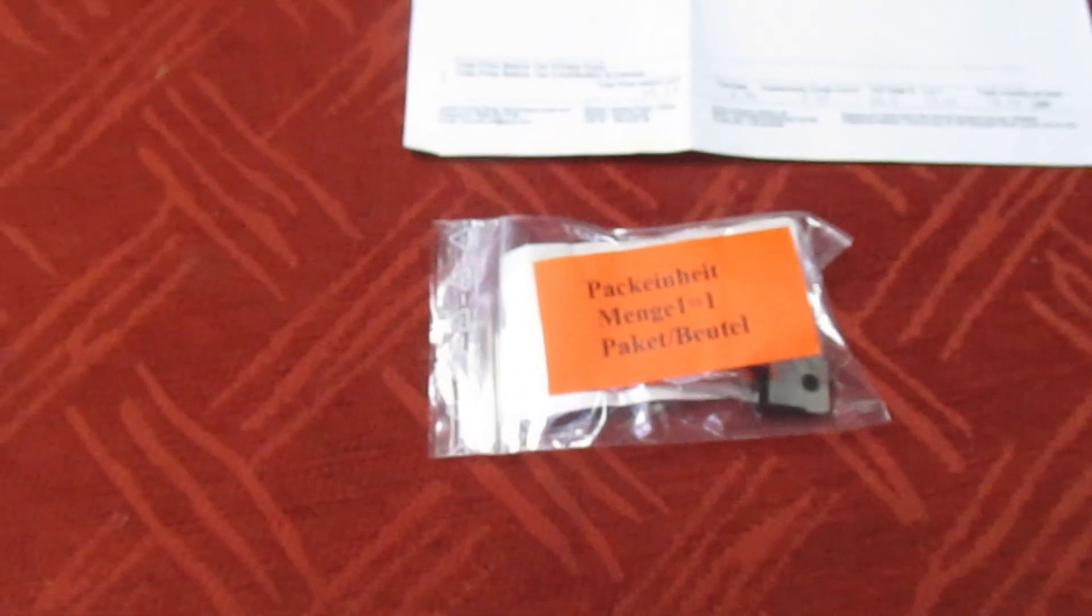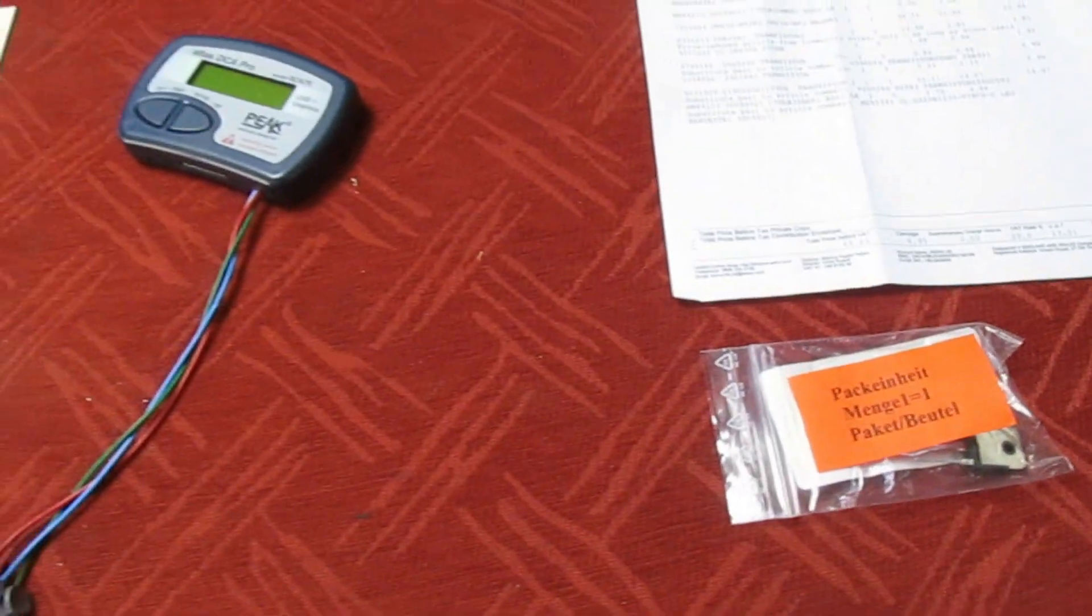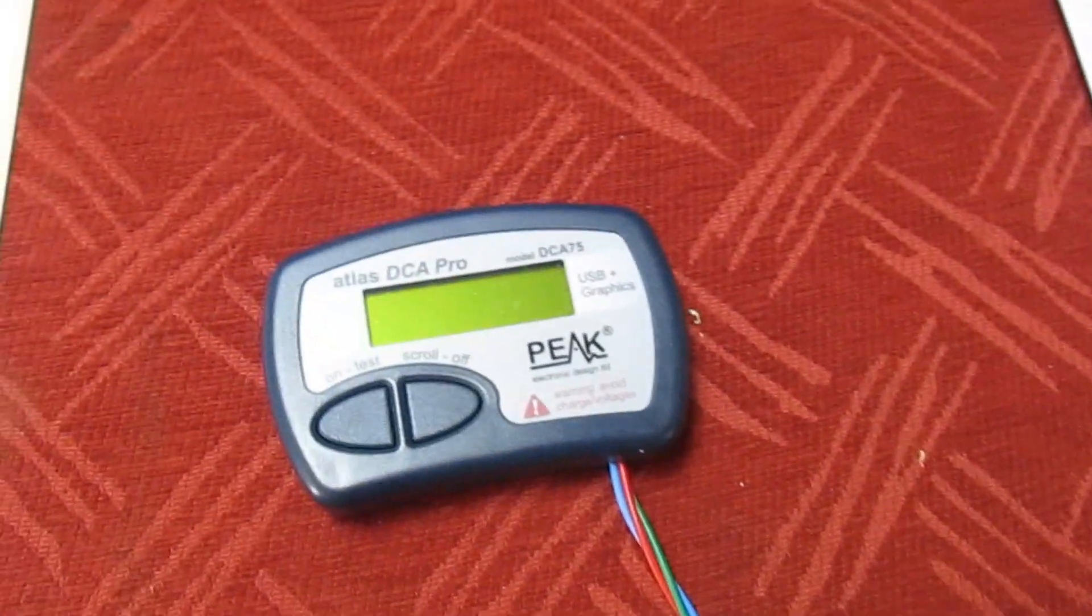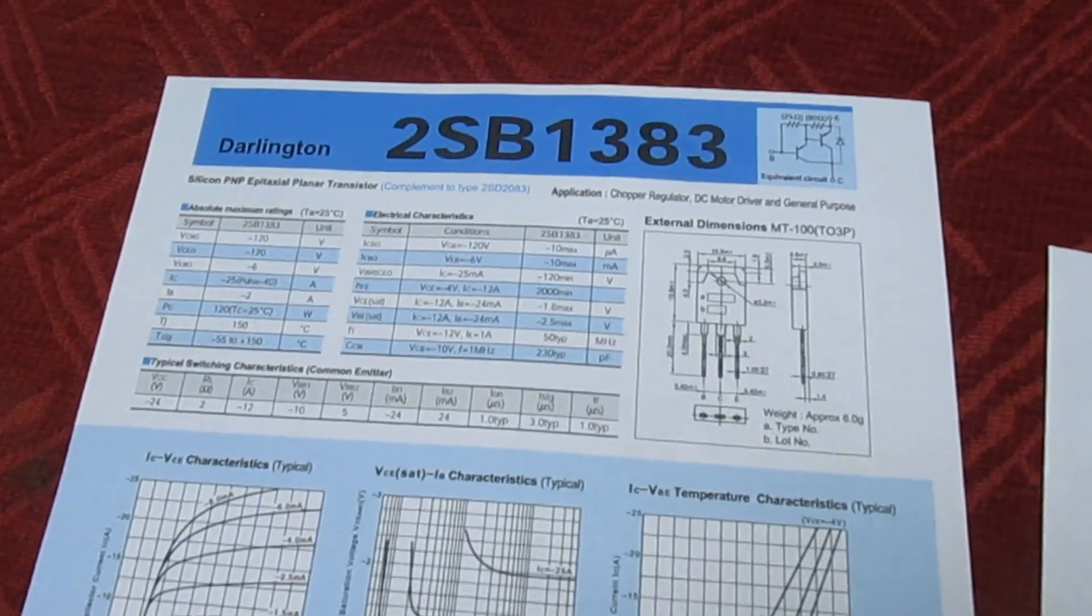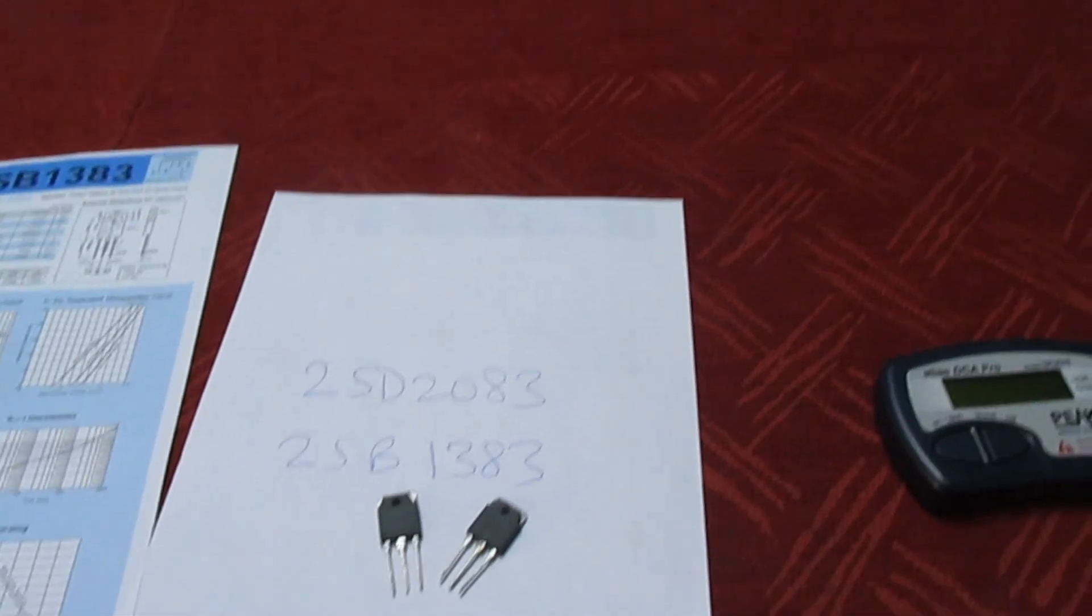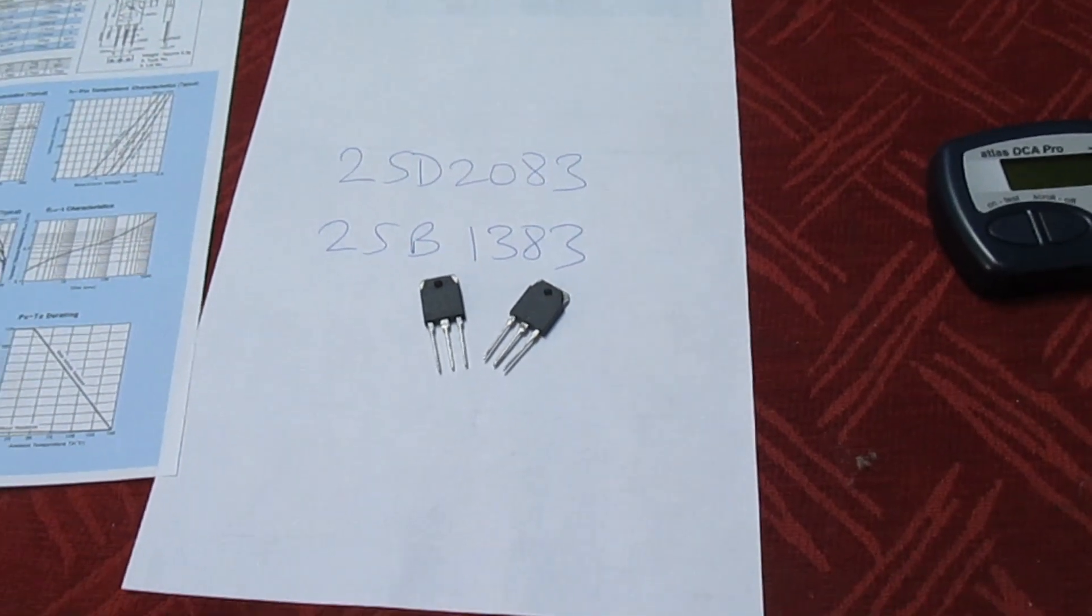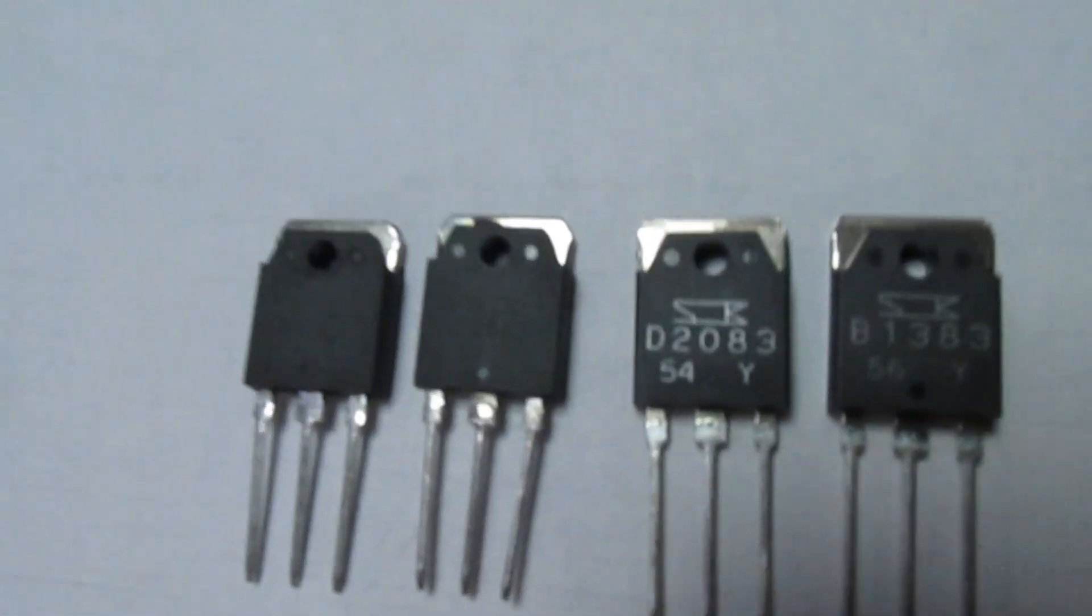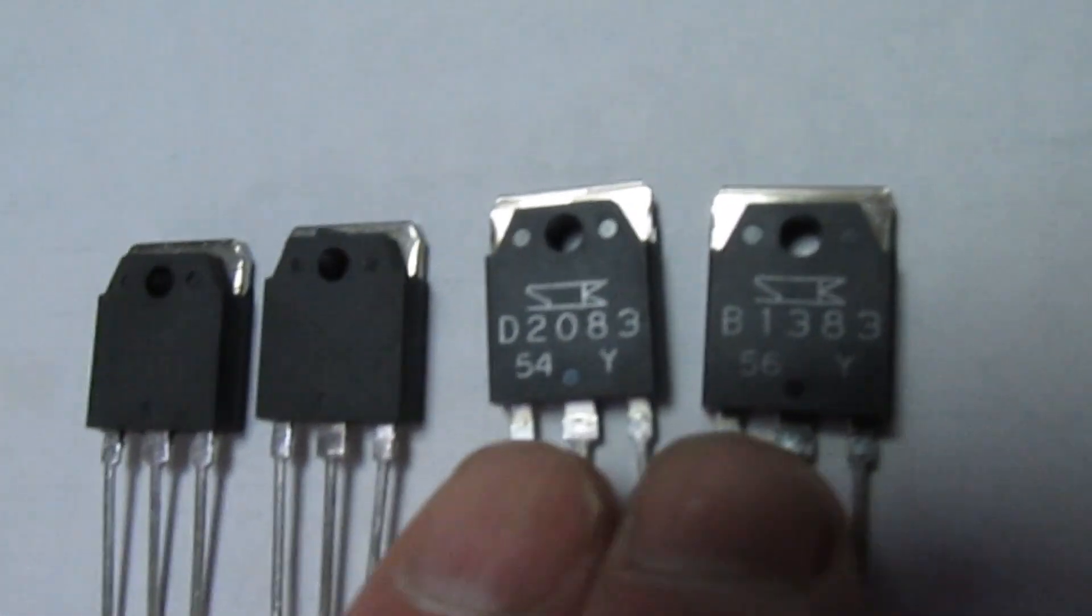Let's get them out of the bag and we're going to do some tests on these with the Peak Atlas DCA Pro, in conjunction with the data sheet. We're going to make some measurements. Let's stop the camera and get the genuine ones out.